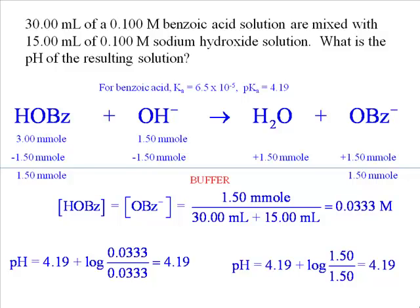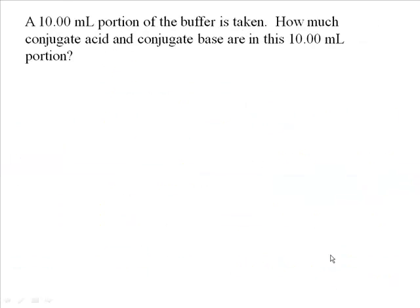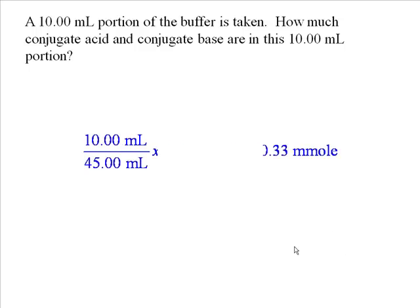Now we're going to divide this buffer into four 10-milliliter portions, leaving 5 milliliters extra. Each portion will be treated differently. Taking a 10-milliliter portion from the original 45-milliliter buffer, we set up a simple proportion: 10/45 times 1.5 millimoles, which gives us 0.33 millimoles each of conjugate acid and conjugate base in each 10-milliliter portion.